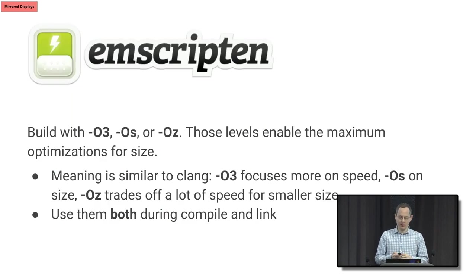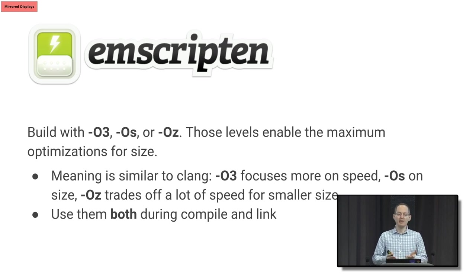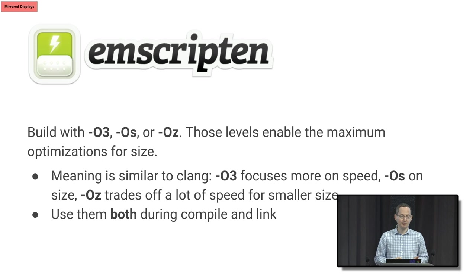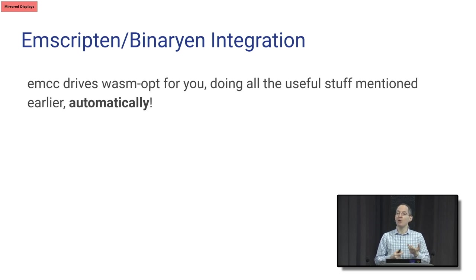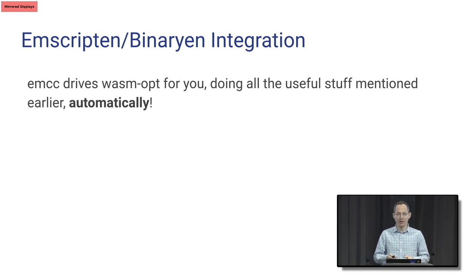A few specific tips for the Emscripten compiler. The main thing to keep in mind is to build with -O3, -Os, or -Oz. Those enable the maximum optimizations for size. Their meaning is generally similar to GCC and Clang: -O3 focuses a little more on speed, -Os a little more on size, and -Oz will do a bunch of tradeoffs even more for size that may impact speed. Remember to use them both during compile and during link because they help at both stages. Emscripten has a bunch of integration with Binaryen and wasm-opt — it'll run wasm-opt for you automatically, so you get all that ~20% reduction without needing to do anything yourself.